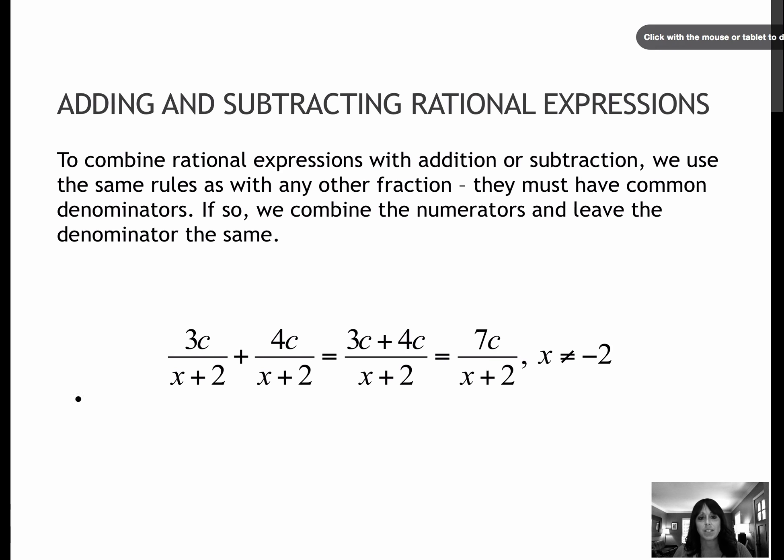So here, as you can see, I have a common denominator of x plus 2 for both of my fractions, which means that I'm really just going to simplify the top by combining 3c plus 4c, which of course gives me 7c. We still, of course, will look at restricting our denominator, but again, the focus is on adding or subtracting the numerators.